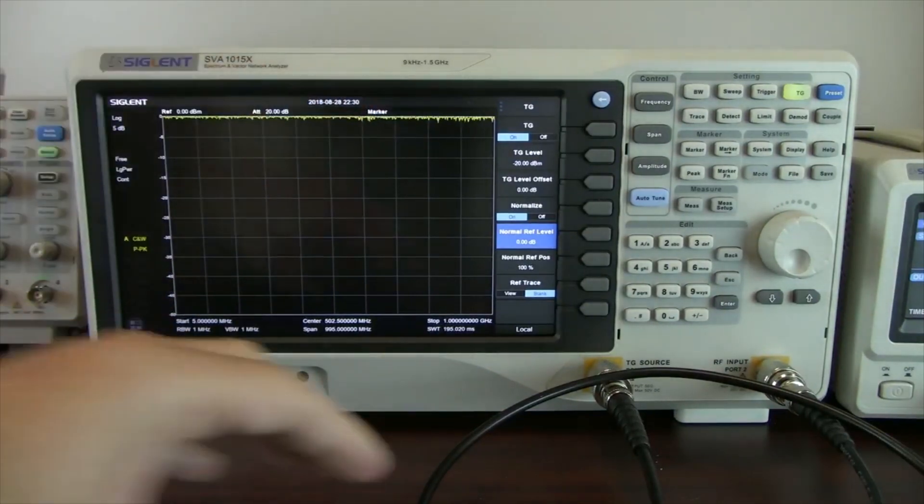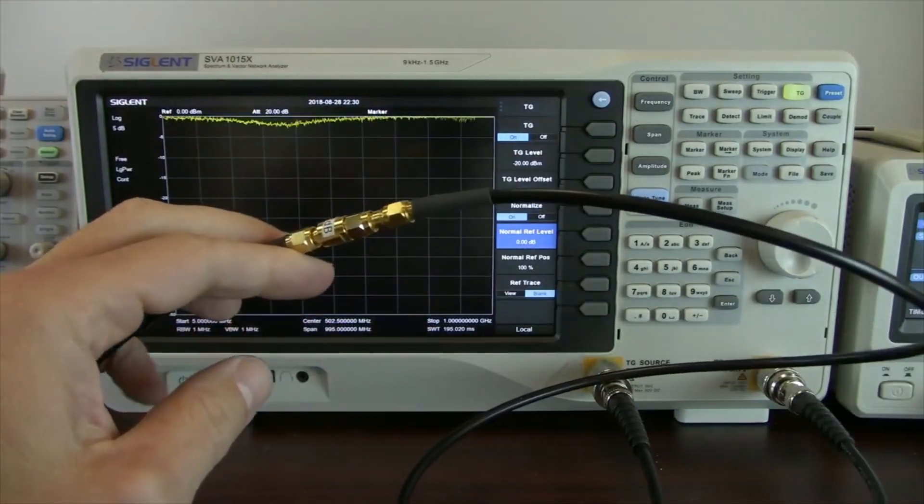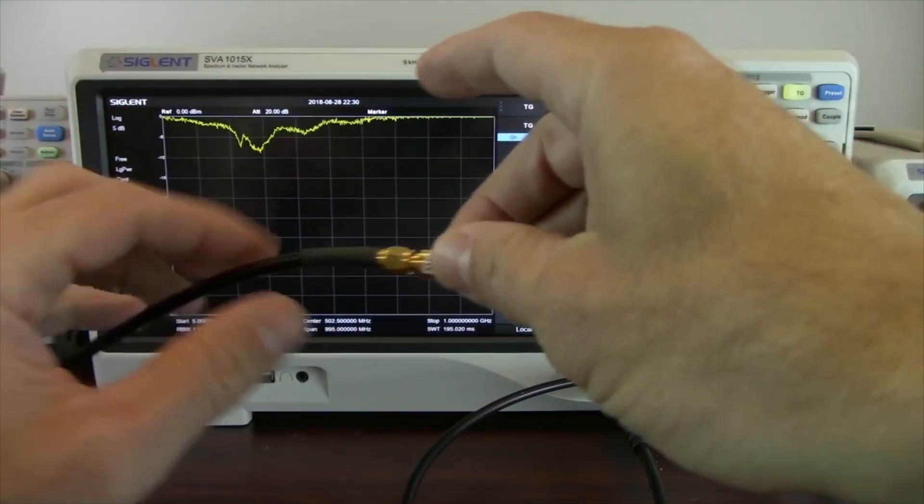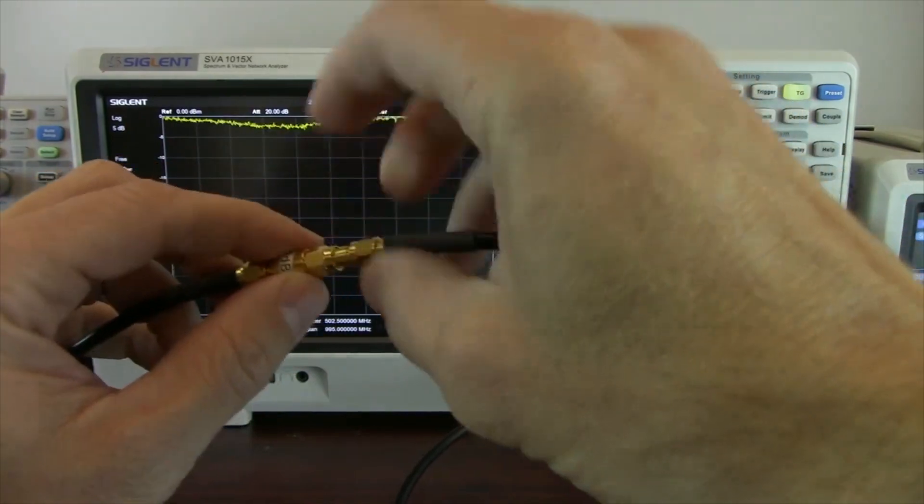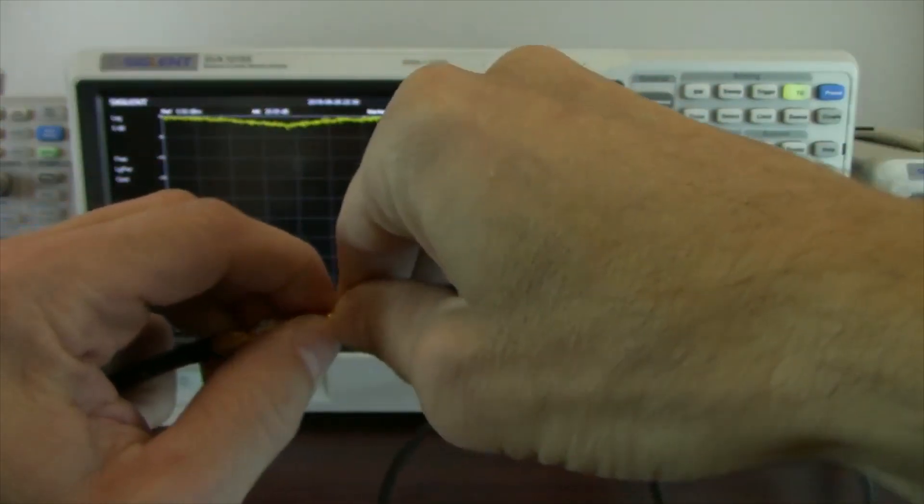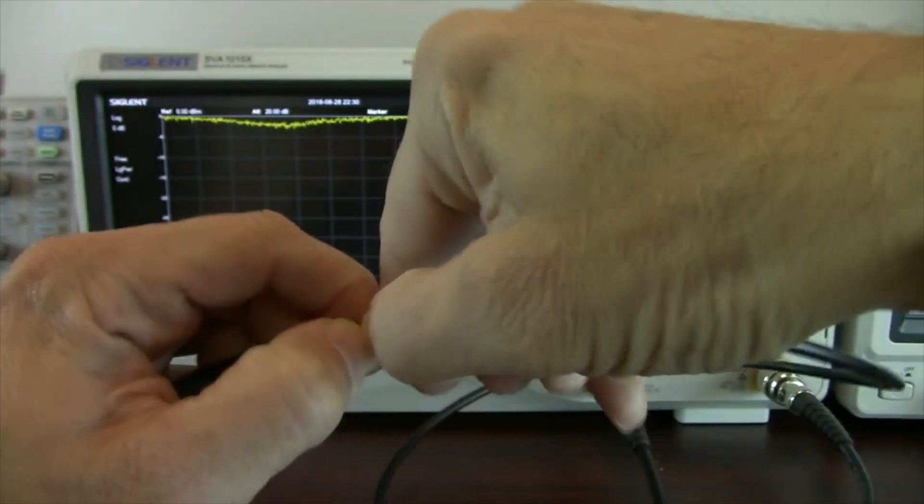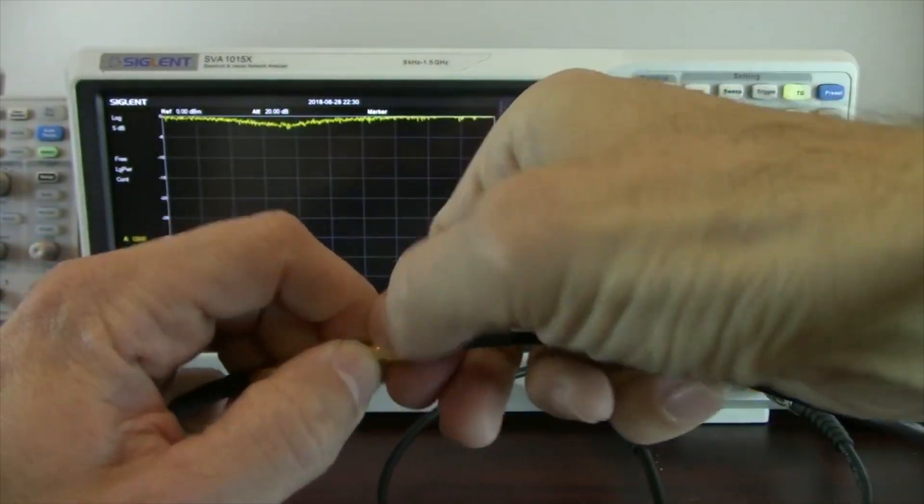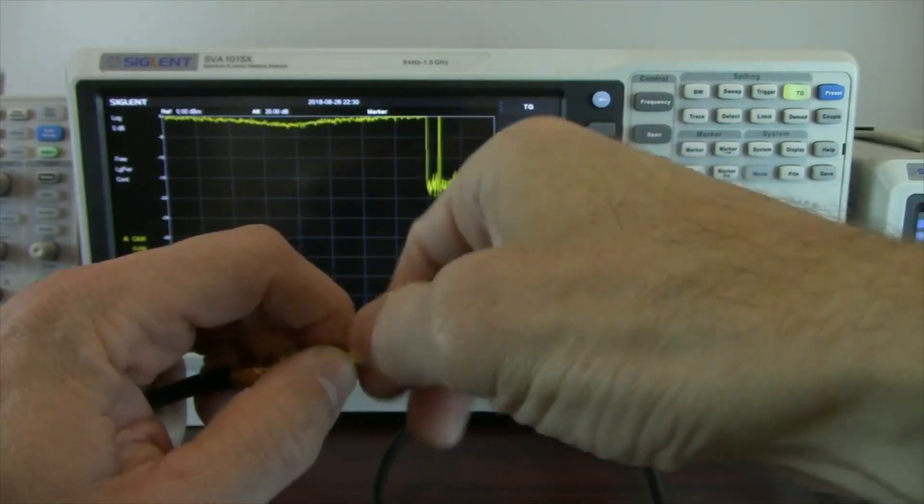So now we're making relative measurements to that original input. We actually have minus 20 dB minus another 20, so minus 40 dB, but we're removing all of that mathematically. So everything we measure after this, all the measurements are going to be relative.